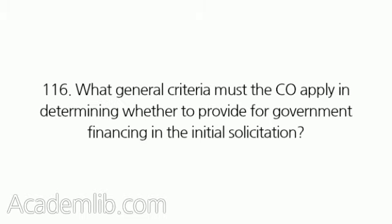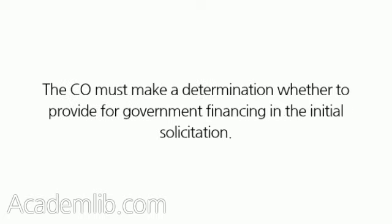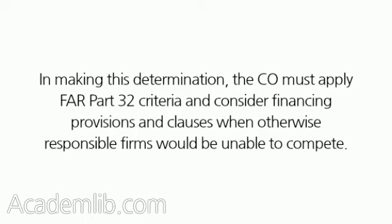Government Financing. Question 116: What general criteria must the CO apply in determining whether to provide for government financing in the initial solicitation? The CO must make a determination whether to provide for government financing in the initial solicitation. In making this determination, the CO must apply FAR Part 32 criteria and consider financing provisions and clauses when otherwise responsible firms would be unable to compete.